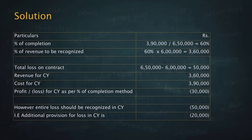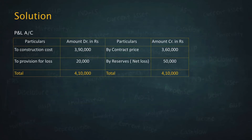Effectively, the net loss in P&L will be 50. In P&L: contract price 360, contract cost or construction cost 390, provision for loss 20, giving a net loss of 50.